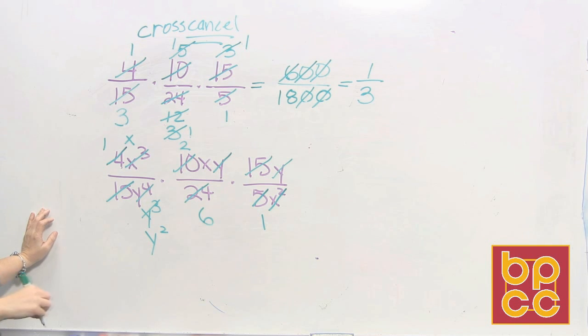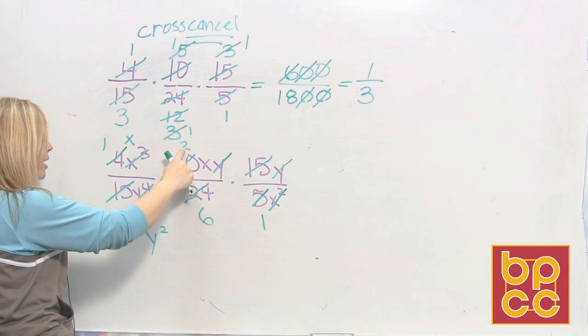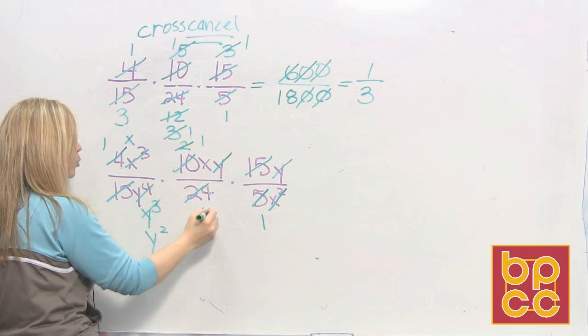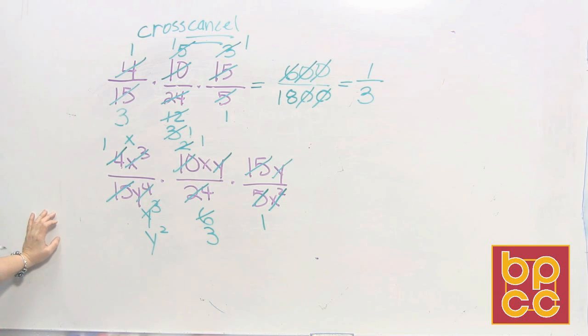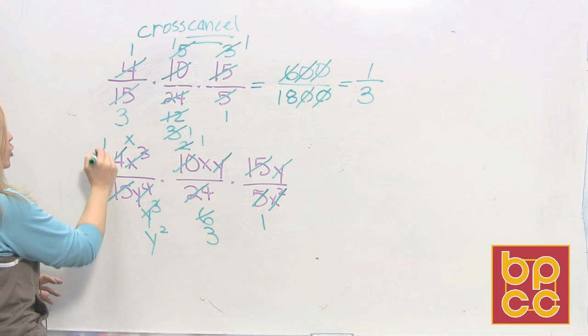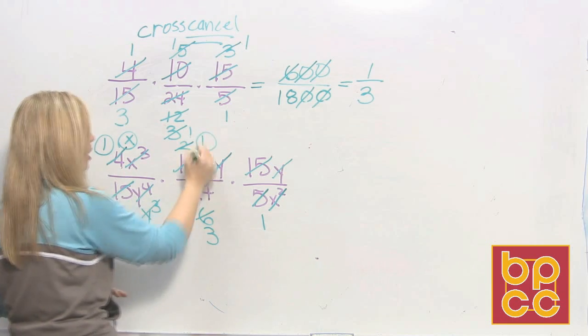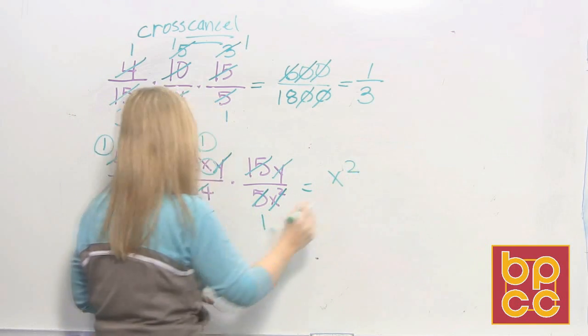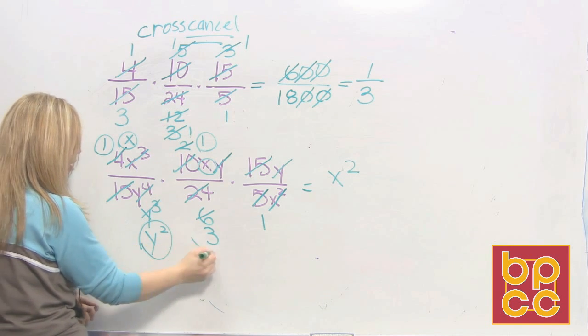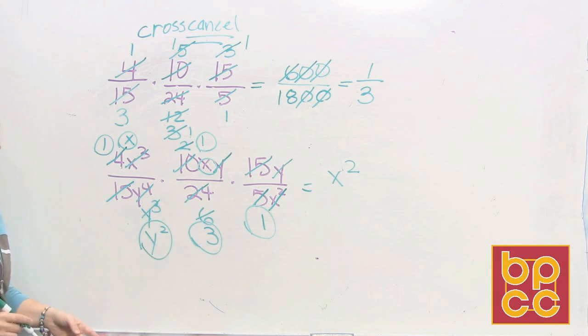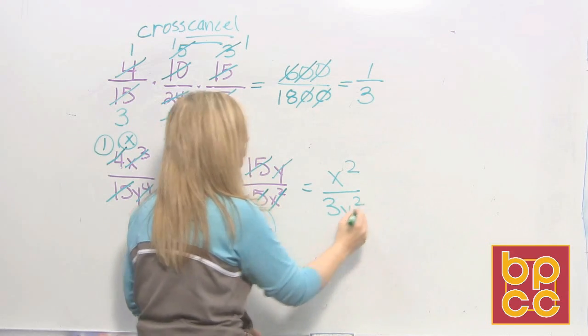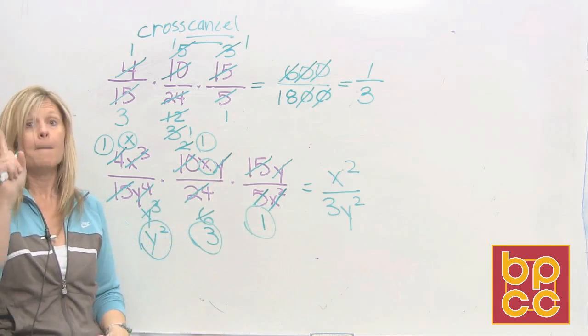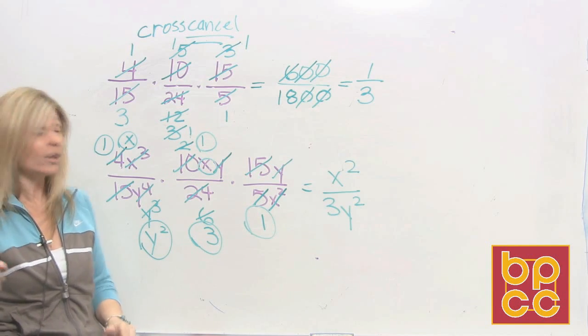Now look. Is everything reduced? Well I'm not completely done. I still have a 2 up here and I see a 2 can divide into 6. So just remember reducing and canceling can go either diagonally or up or down. 2 goes into 2 once. 2 goes into 6 three times. In your numerator you have an x times x, which is x squared. If you look in the denominator, I have a y squared, a 3 and a 1. Well 3 times 1 is 3 and 3 times y squared is 3y squared.